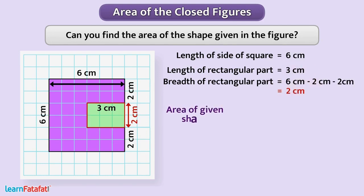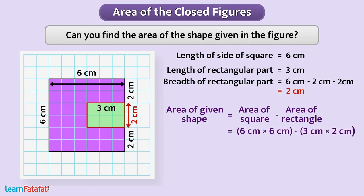So, area of given shape is equal to area of square minus area of rectangle, which is equal to 6 centimeter multiplied by 6 centimeter minus 3 centimeter multiplied by 2 centimeter is equal to 36 square centimeter minus 6 square centimeter that is equal to 30 square centimeter.